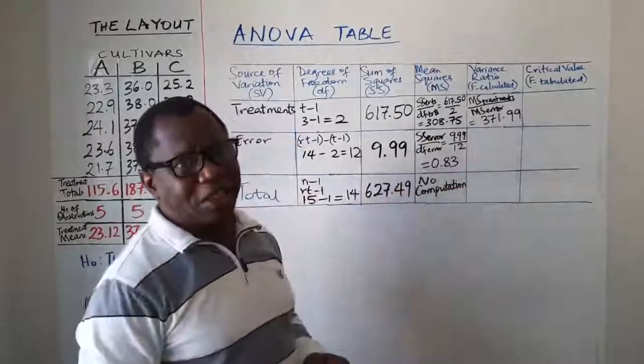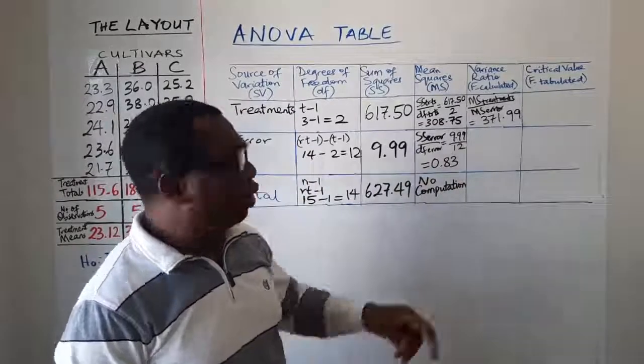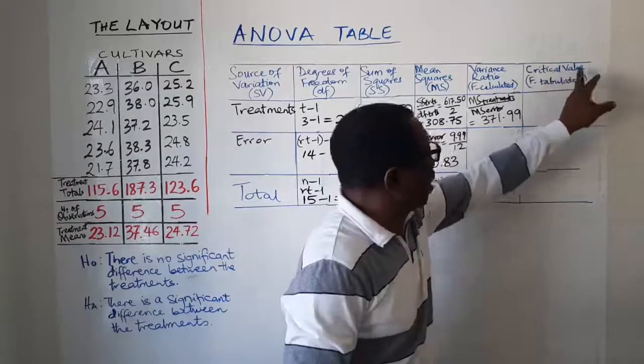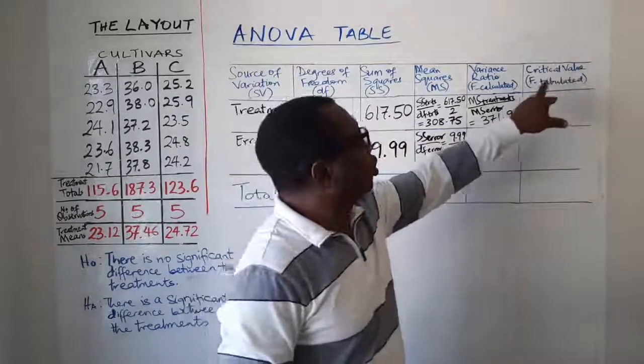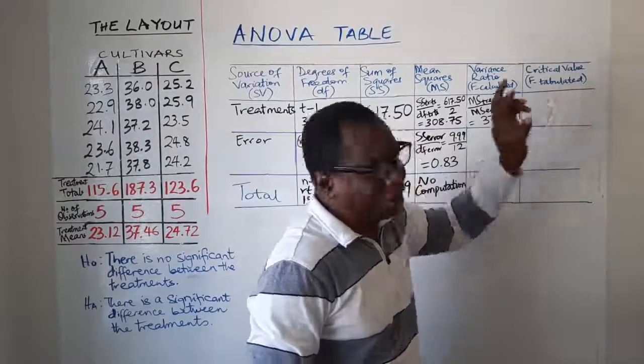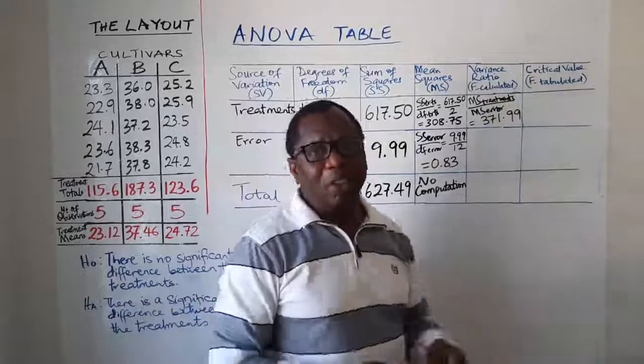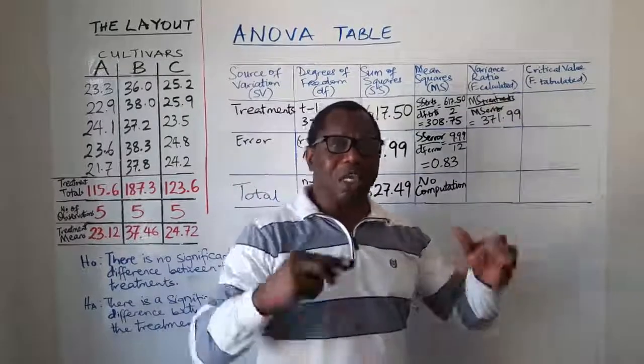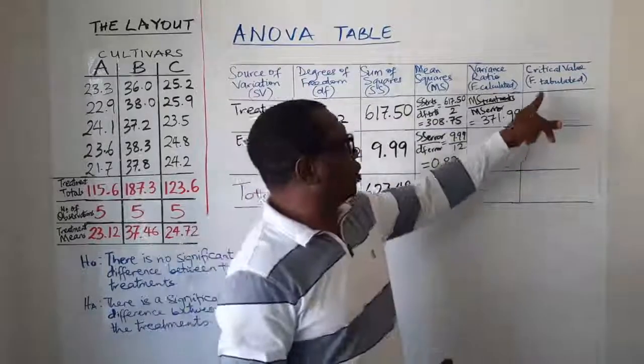So that is the answer there. But that's not the end of your computation. You will still add this value here, which is the critical value for F. We abbreviate it as F tab or F tabulated. How do you obtain this? You go to the statistical table. So it is the statistical table that will give you this value.